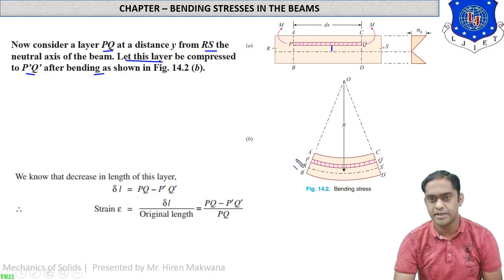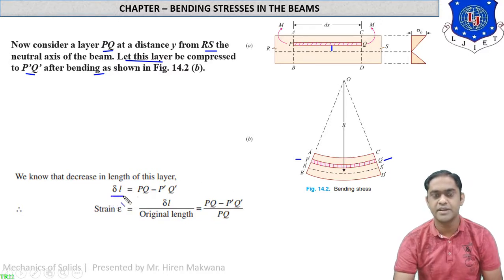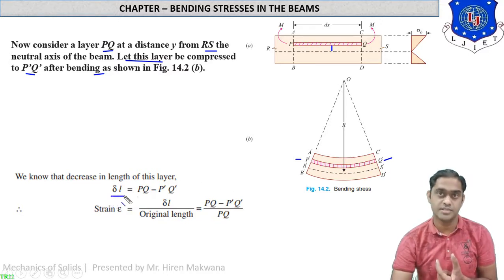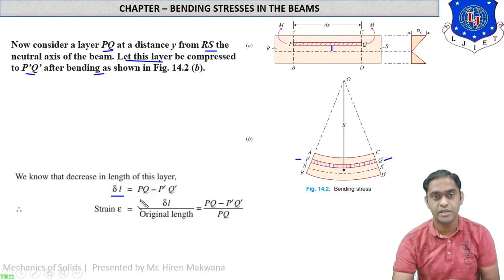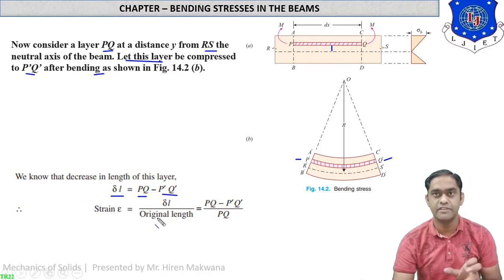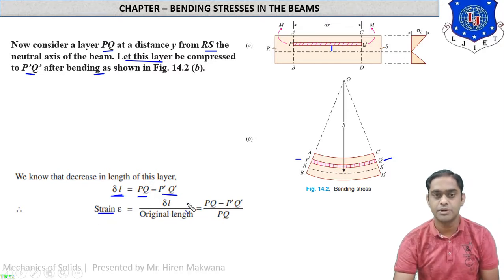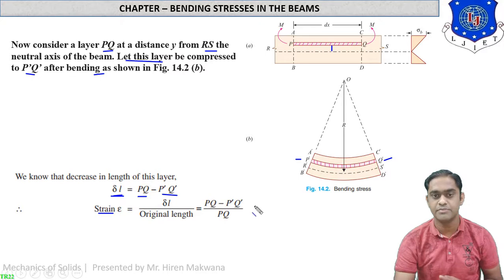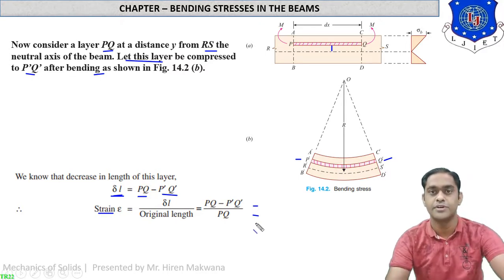After bending, this layer becomes P'Q', which is decreased in length. The decrement in length is delta L, which equals PQ minus P'Q'. The strain epsilon equals delta L upon original length, which is change in length upon original length. So replacing the values, strain epsilon equals (PQ minus P'Q') upon PQ. This is the equation of strain.